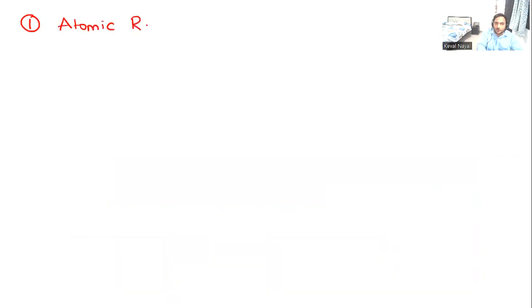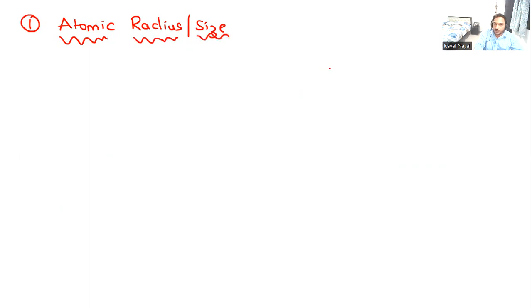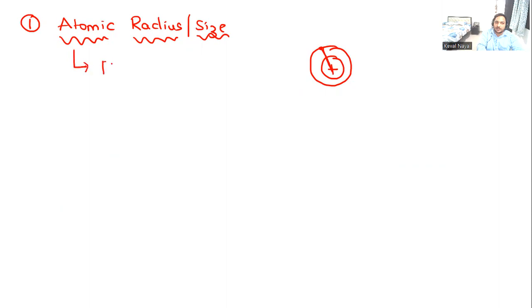We are going to talk about atomic radius, atomic size. Basically, atomic radius is the distance from the center — that is the nucleus — till the outermost orbit. That distance we call the radius. Now, this atomic radius depends on certain factors or parameters.